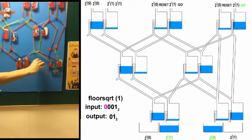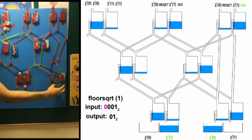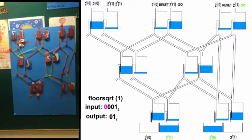The 1's place for the answer is 1. The 2's place of the answer is 0. The answer is 0, 1 in binary, which is 1. The square root of 1 is 1.